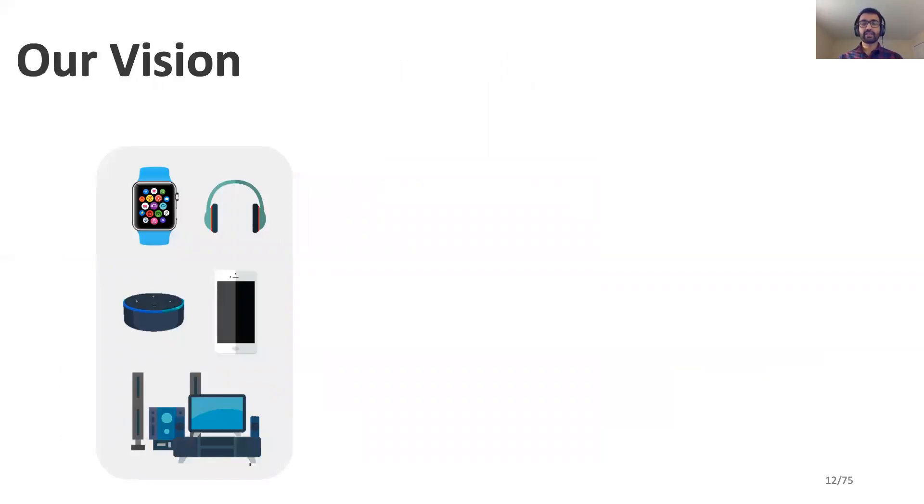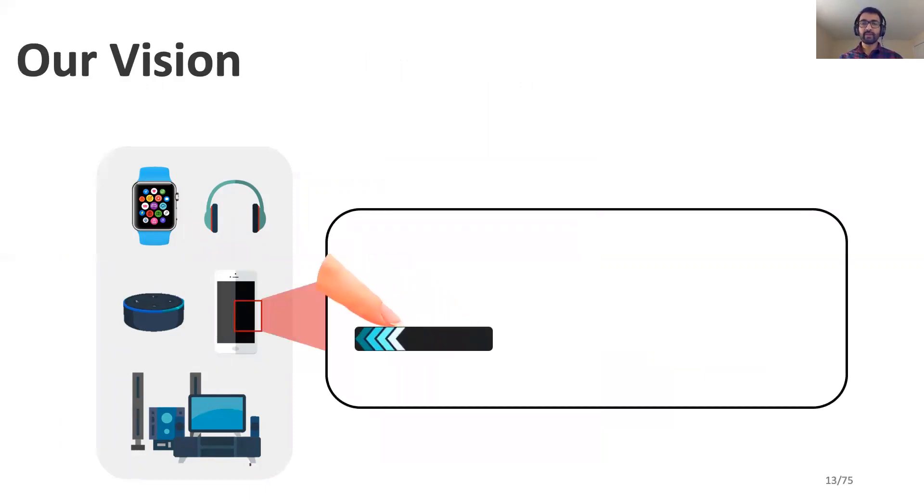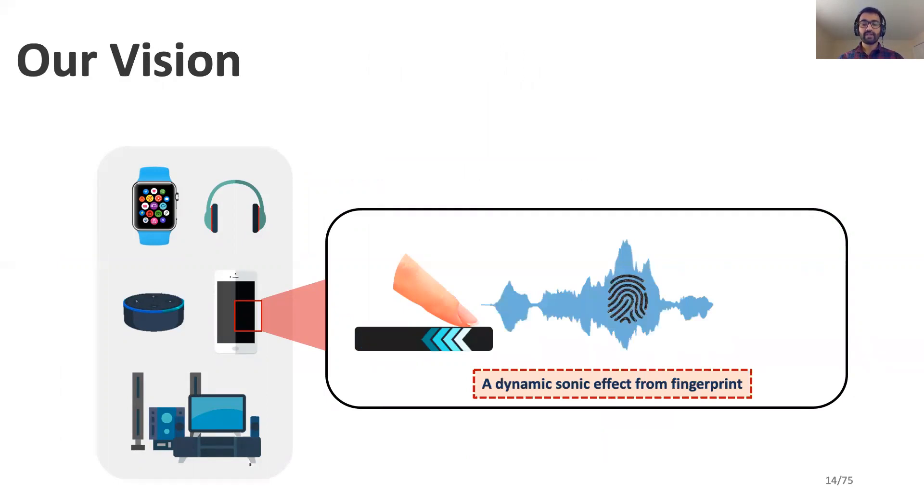Our vision considers several different smart devices across different domains and a user who uses his finger to interact with each of these smart devices. The interaction is in the form of swipe action from which a unique signal is generated that contains some intrinsic information about the user's fingerprint. We imagine that this information can be used for user identification and cannot be compromised by traditional attackers.